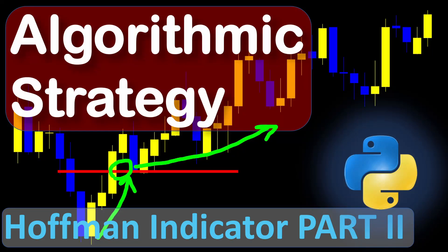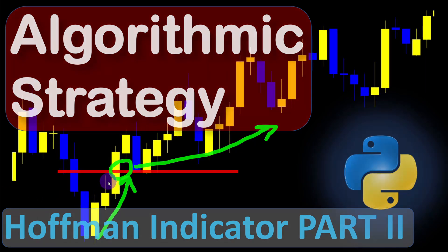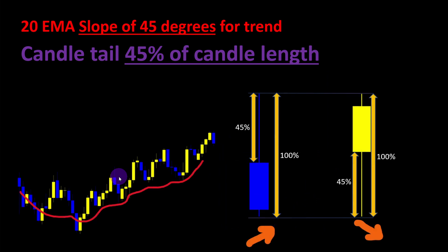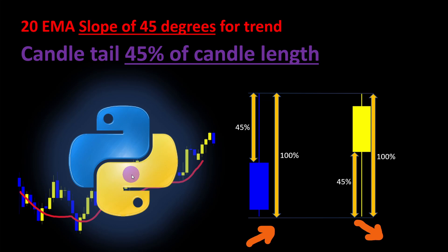This video is a continuation of the Hoffman's inventory bar retracement method introduced in the previous video. If you are interested in the code, you can download the Jupyter notebook file from the link in the description below. For the strategy itself, I will not go through all the details as these were previously explained. In brief, we are looking for a certain slope angle defining the price trend and particular shapes of candles where the tail is at least 45 percent of the whole candle's volume. In this video, we are going to use these bars in a trading strategy, backtest our system, and check the results.